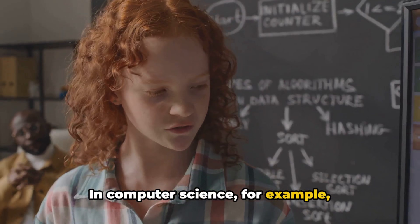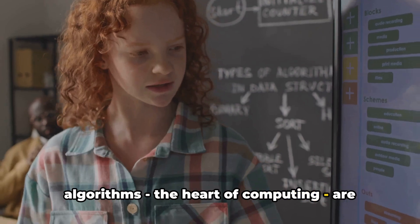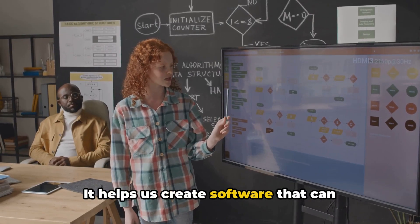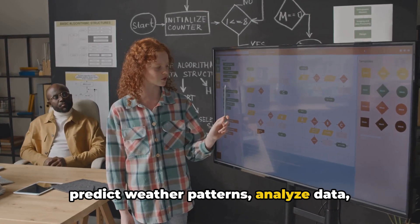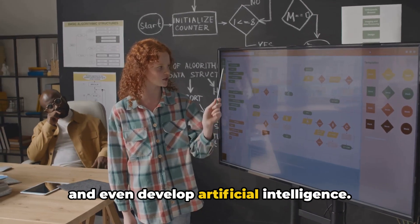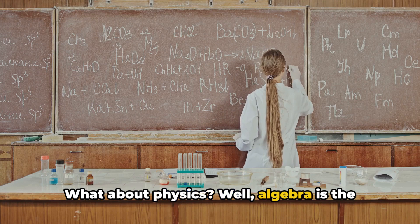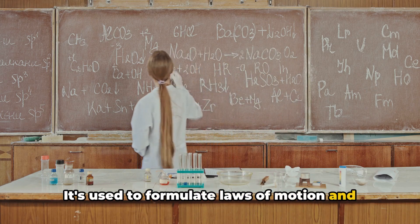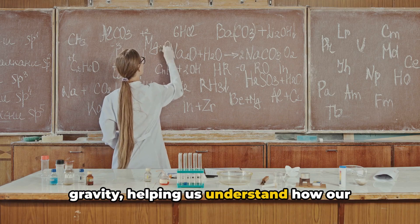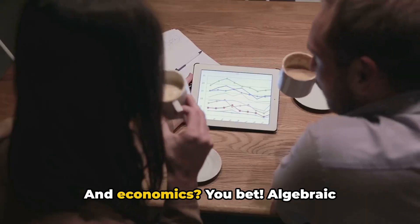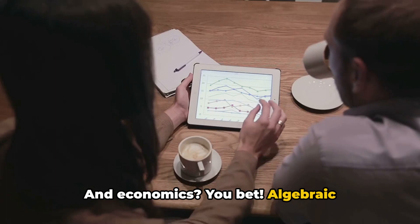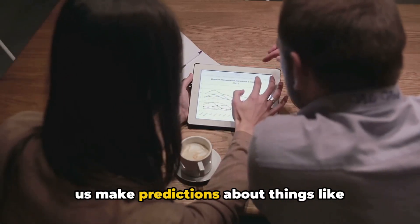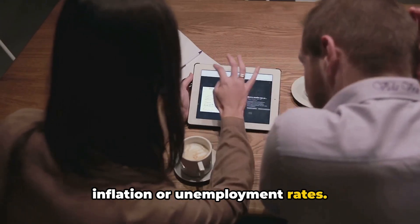In computer science, for example, algorithms, the heart of computing, are built on algebraic structures. It helps us create software that can predict weather patterns, analyze data, and even develop artificial intelligence. What about physics? Well, algebra is the bedrock here, too. It's used to formulate laws of motion and gravity, helping us understand how our universe works. And economics, you bet!